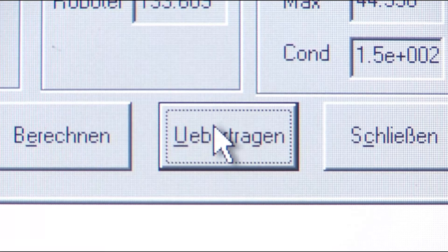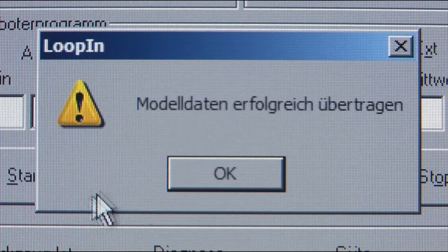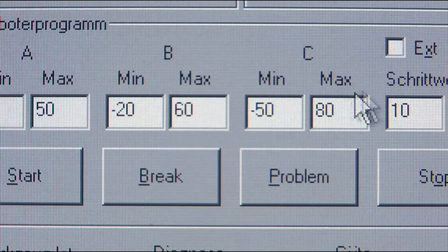By pressing the transmission button, the new neutral positions of axles A1 to A6 are transmitted to the robot control.